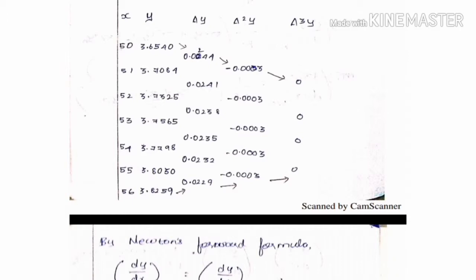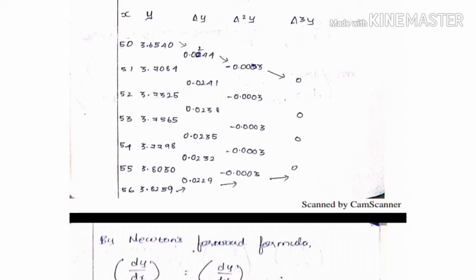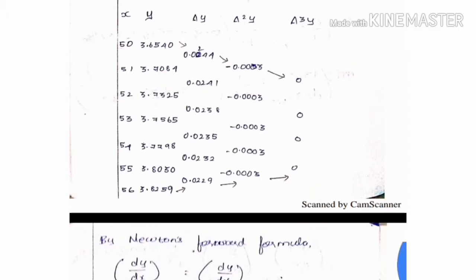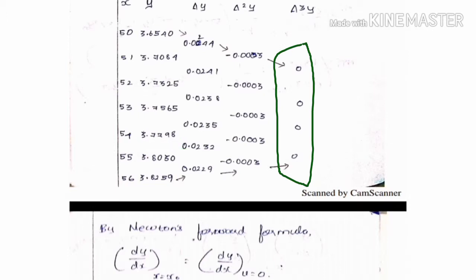Now, delta y is computed as: 3.7084 minus 3.6540 gives 0.0544; 3.7325 minus 3.7084 gives 0.0241. Continuing the same procedure, we compute delta squared y and delta cubed y values, with delta cubed y approaching 0.